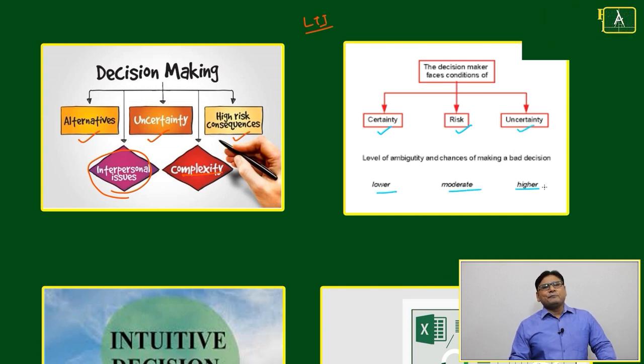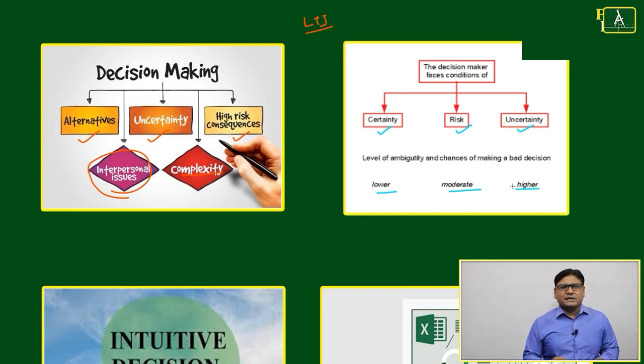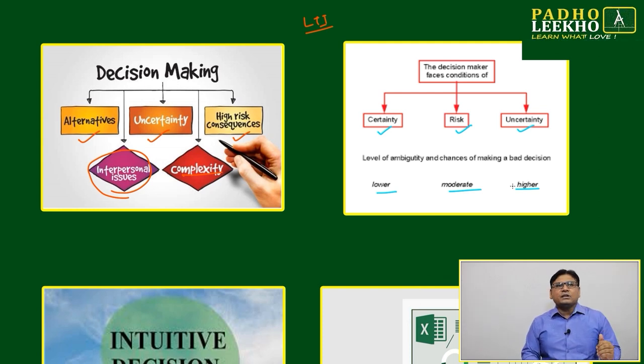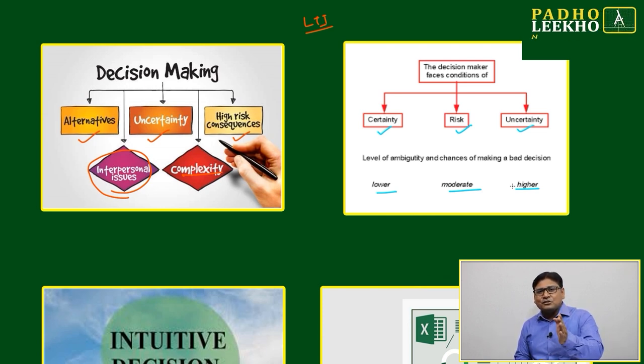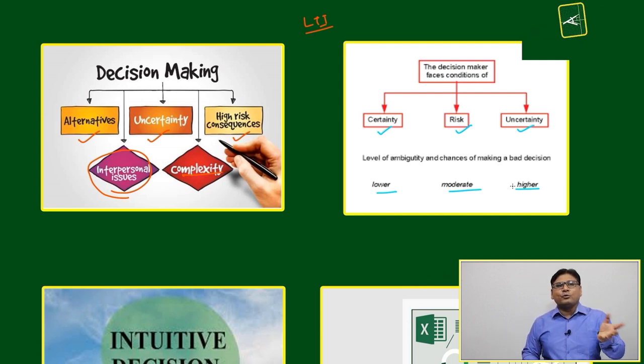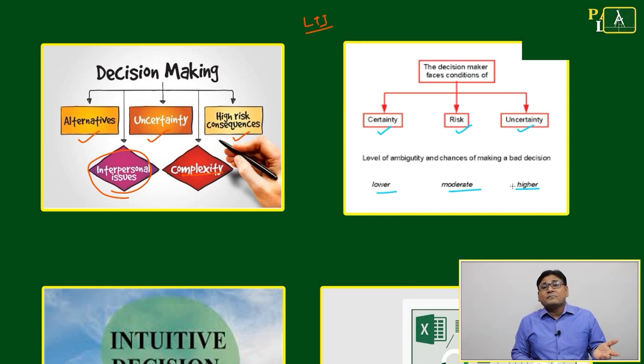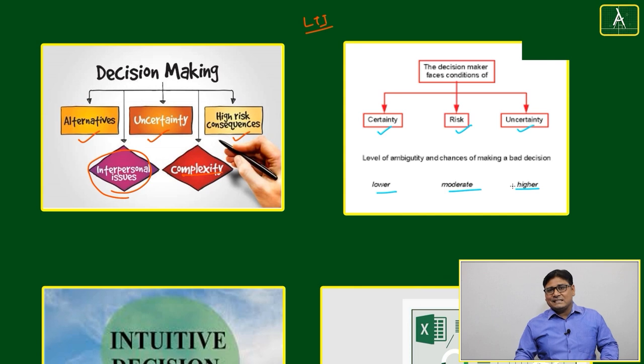For taking decisions, so many new softwares are there. They will categorize your each and every factor. Like uncertainty - suppose five uncertainties are there. Every uncertainty they will define based on the degree of consequences: maybe 0.1, 0.2, 0.3, 0.4, 0.5, or we can define it as lower, moderate, higher, or highest. Afterwards, we will take the weighted average or weighted consequences. Based on that, we will arrive at the decision.